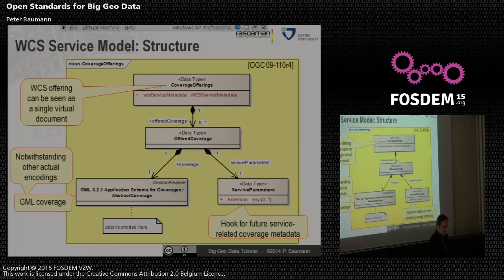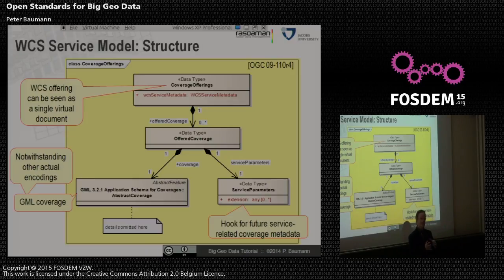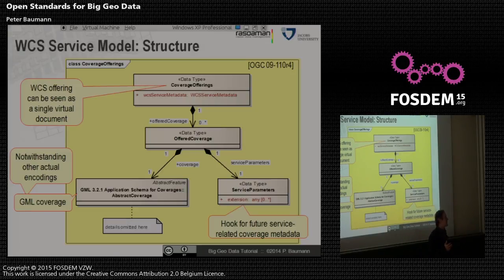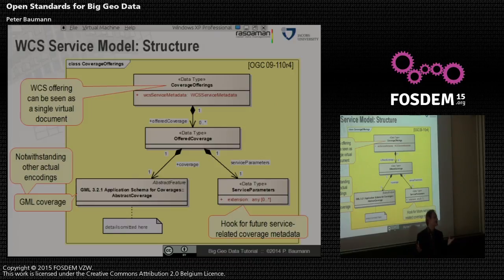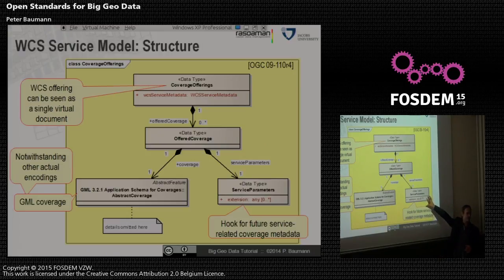Now let's look at the services. Let me start with a UML picture, because that describes nicely what the server has in mind. The Web Coverage Service is the service most focused on the coverage structure. You can serve out coverages via web feature service, web processing service, sensor observation service — whatever — but WCS has the most functionality. The server has a coverage offering with service metadata: what coordinate systems and data formats are supported. We have also foreseen slots for any other descriptive data which service providers or WCS extensions may want to store.